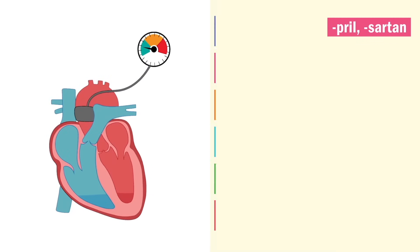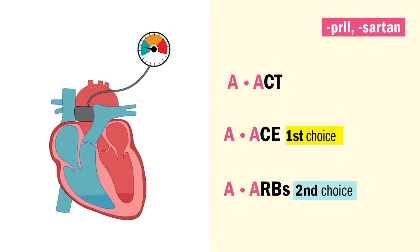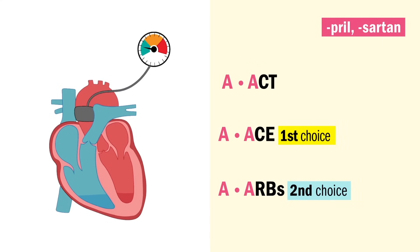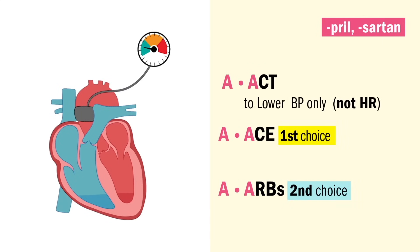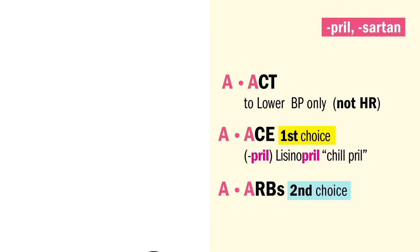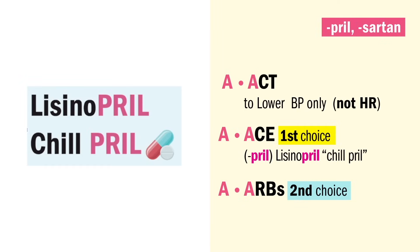Let's break these down one by one. First up, A is for ACE inhibitors and ARBs, who act to lower the blood pressure — not the heart rate. Big on the NCLEX. Our first choice is ACE inhibitors that end in '-pril,' like lisinopril. So we call it a chill prill for the heart.